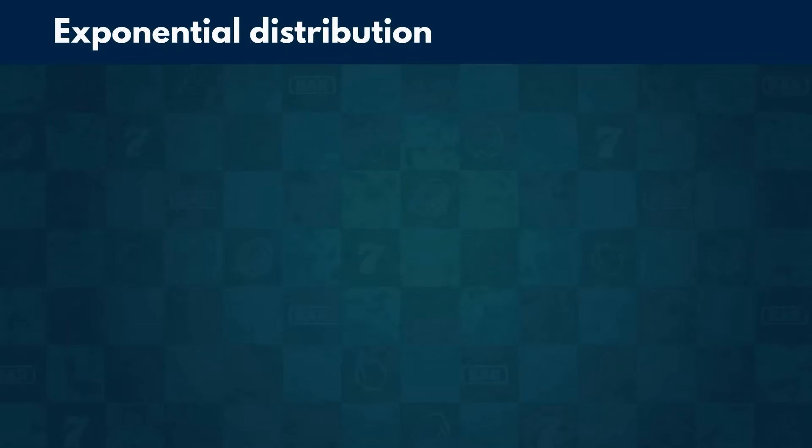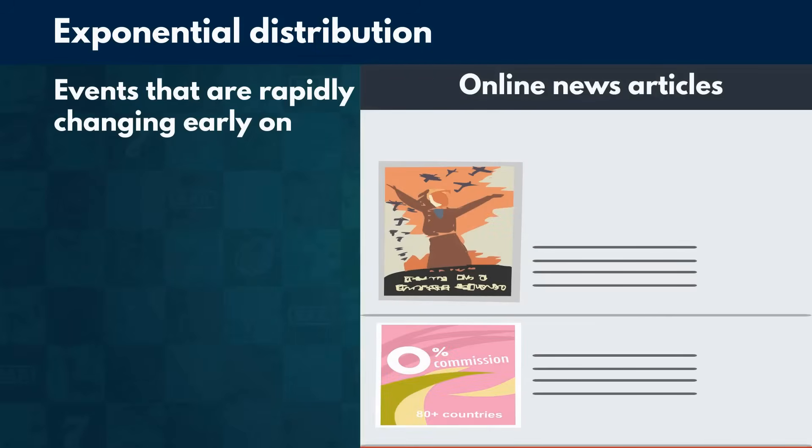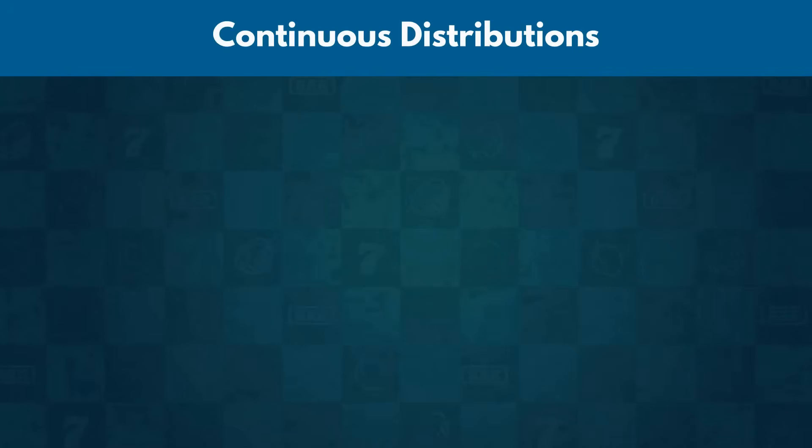The next distribution on our list is the Exponential distribution. The exponential distribution is usually present when we are dealing with events that are rapidly changing early on. An easy-to-understand example is how online news articles generate hits. They get most of their clicks when the topic is still fresh. The more time passes, the more irrelevant it becomes and interest dies off.